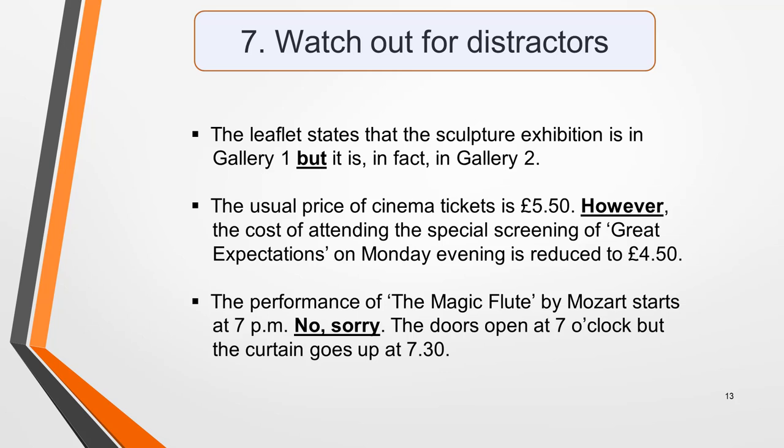The examiners will try and catch you out with distractors. A distractor is a word or phrase that changes or corrects the original piece of information you're given, so you may be given an answer and then have it taken away again. Here are some sample sentences containing distractors. The leaflet states that the sculpture exhibition is in Gallery 1, but it is, in fact, in Gallery 2. The usual price of cinema tickets is £5.50; however, the cost of attending the special screening of Great Expectations on Monday evening is reduced to £4.50. The performance of the Magic Flute by Mozart starts at 7pm — no, sorry, the doors open at 7 o'clock but the curtain goes up at 7.30. The use of 'but' and 'however' are particularly common distractors, but there are many different words and phrases that can be used to change or correct information, so be alert for them.